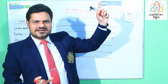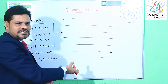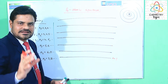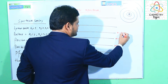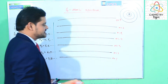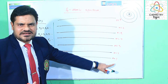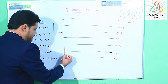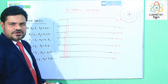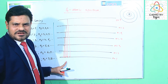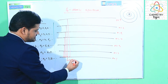If the electron from any higher energy level comes back to the first energy level, the spectrum series formed is called the Lyman series — named after Mr. Lyman who discovered it. The first energy level is fixed as N1, and N2 can come from the second, third, or any higher energy level.